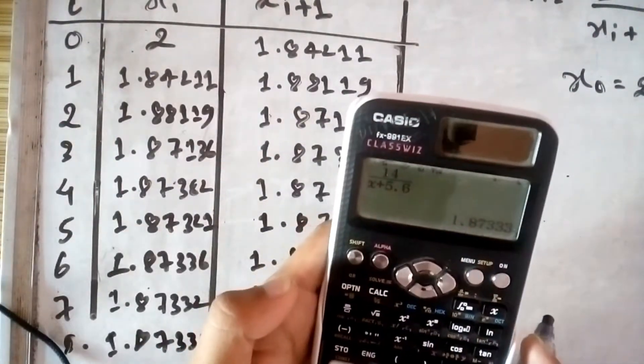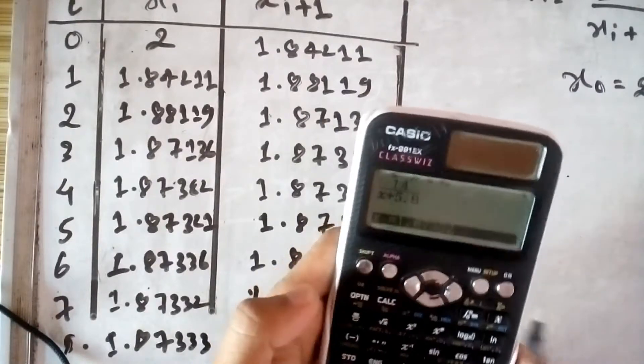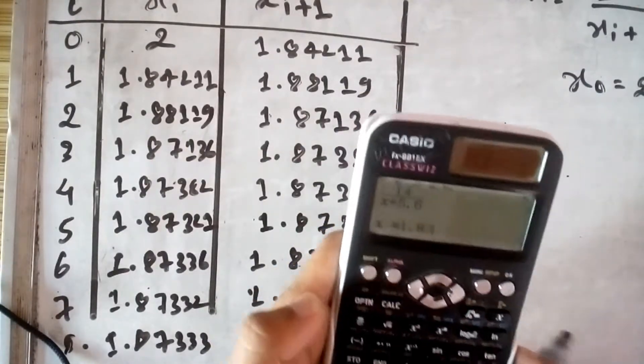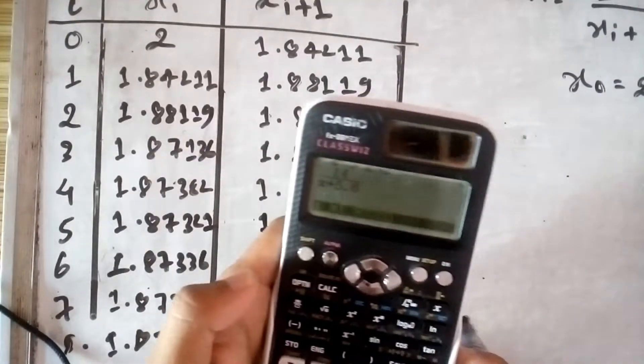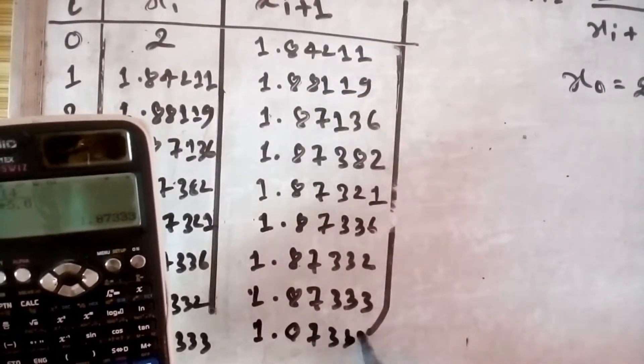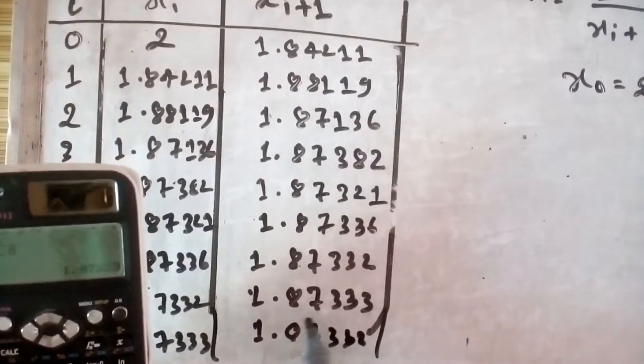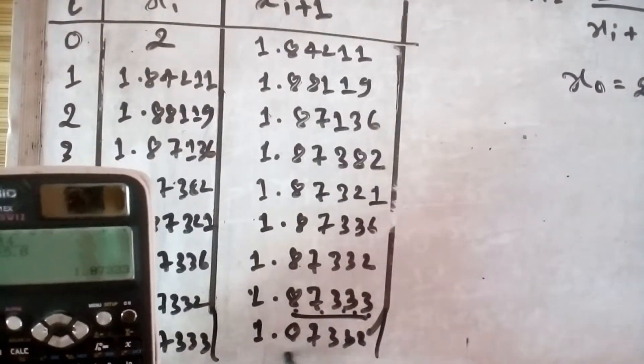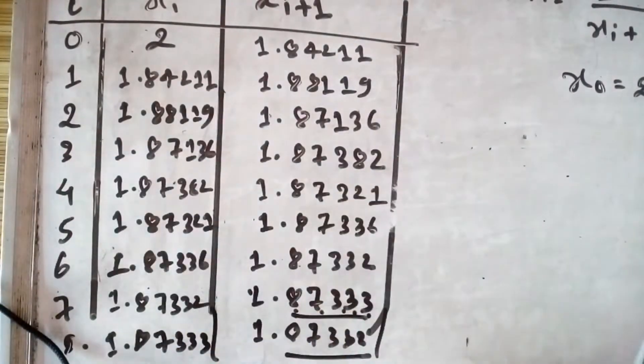Your end. 1.87335, you get 1.87333. So you get one, two, three, four, five, five digits same. That means you got the answer.